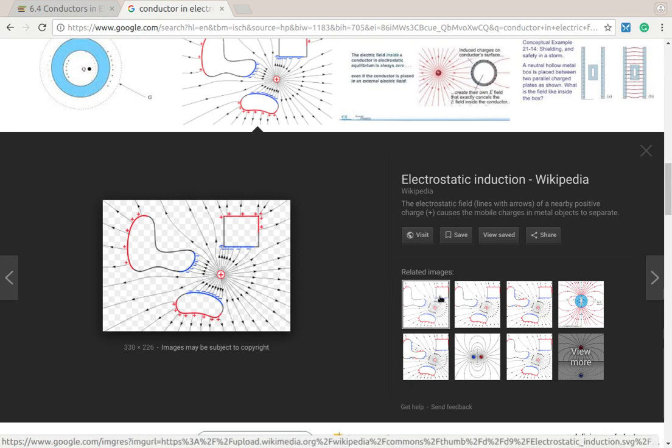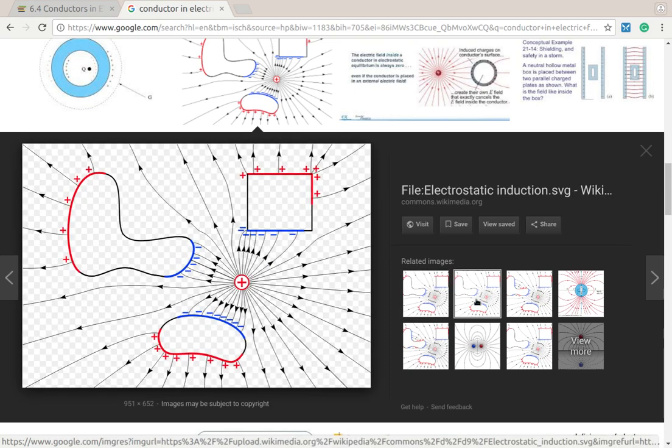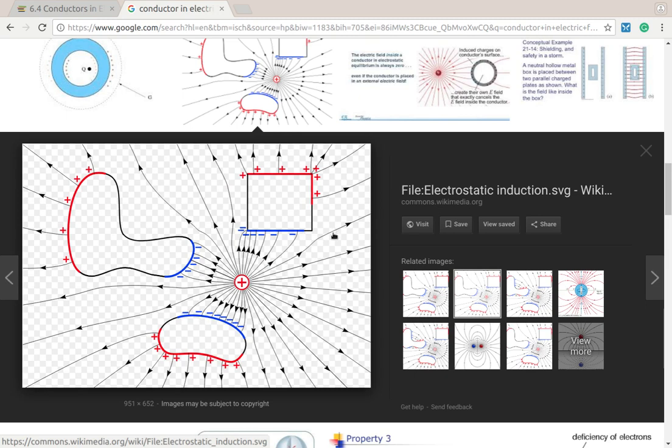So this particular one, and they've got a higher resolution image one, this is on Wikimedia Commons. You've got a positive charge, which would normally make the electric fields go straight out. But we place a couple of conductors, a rectangular one and a few odd shapes in there.